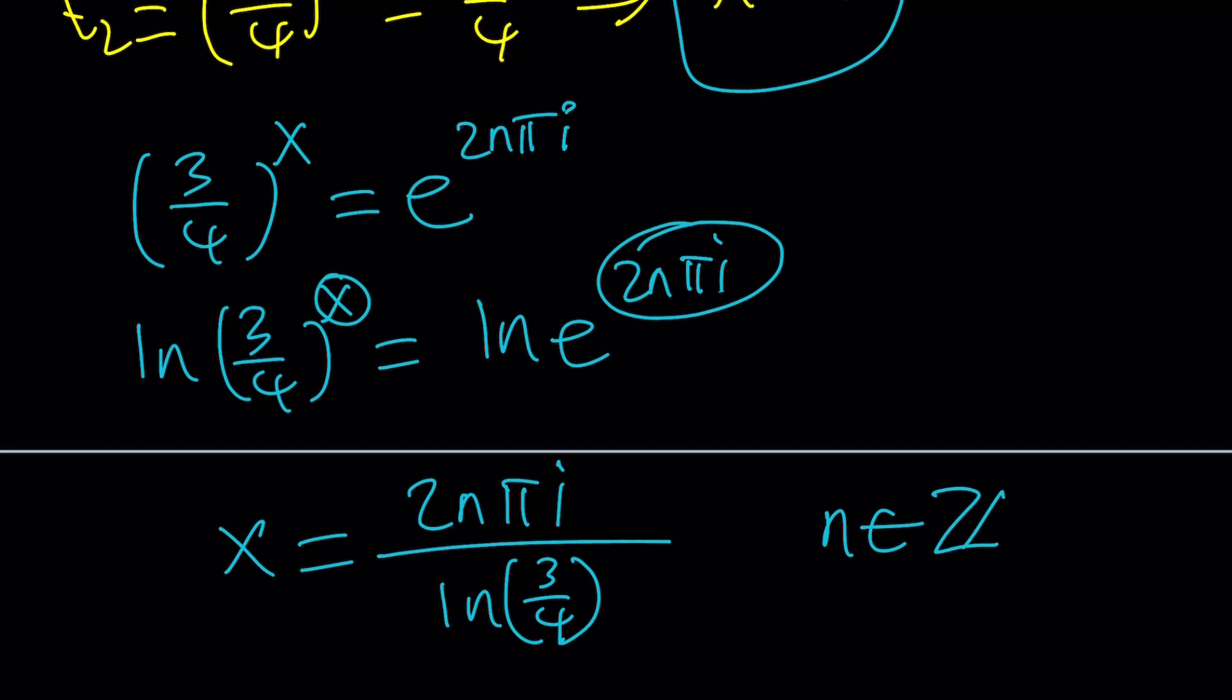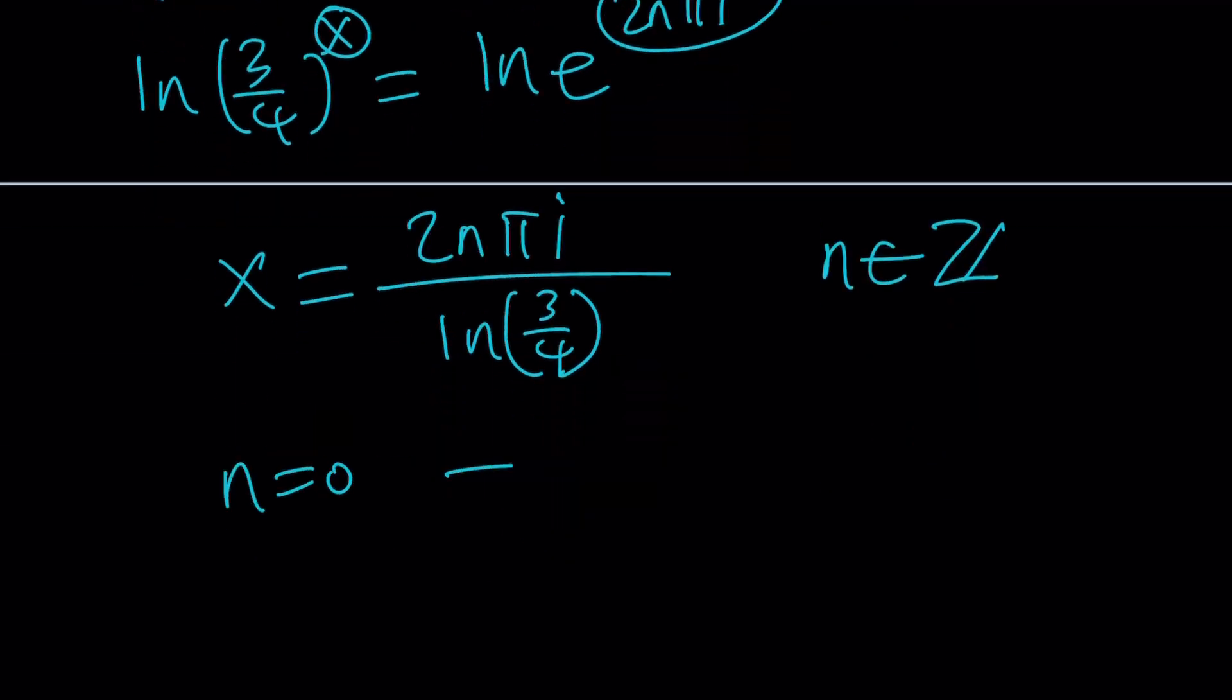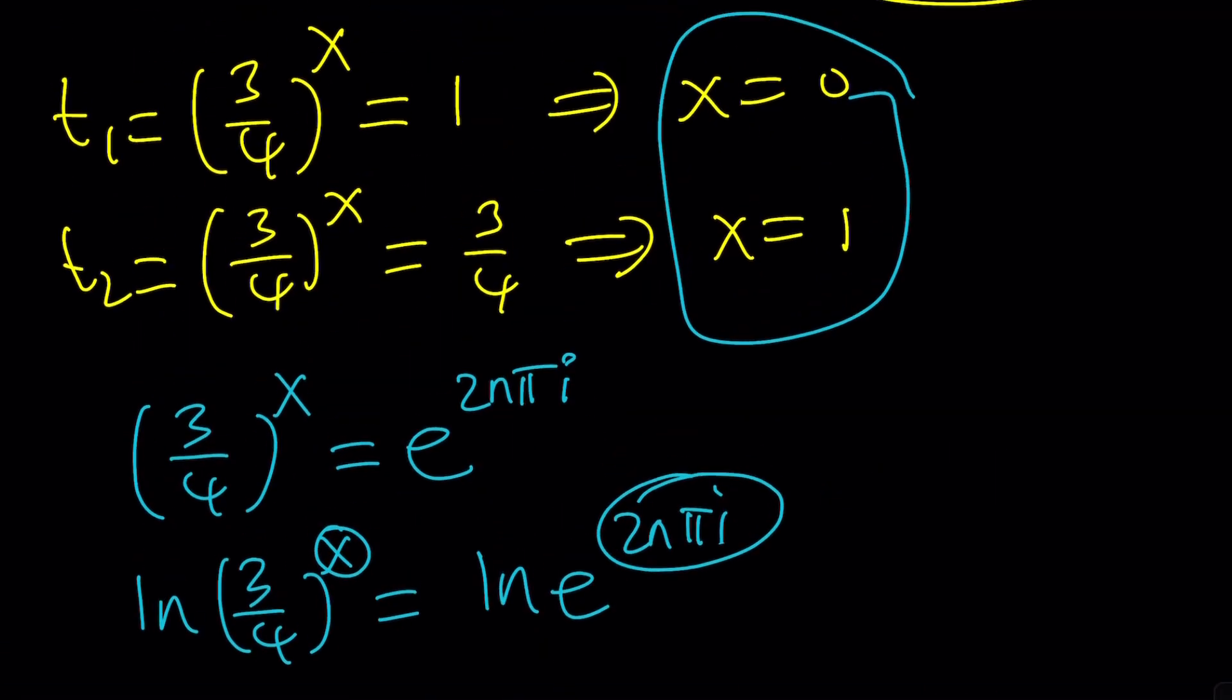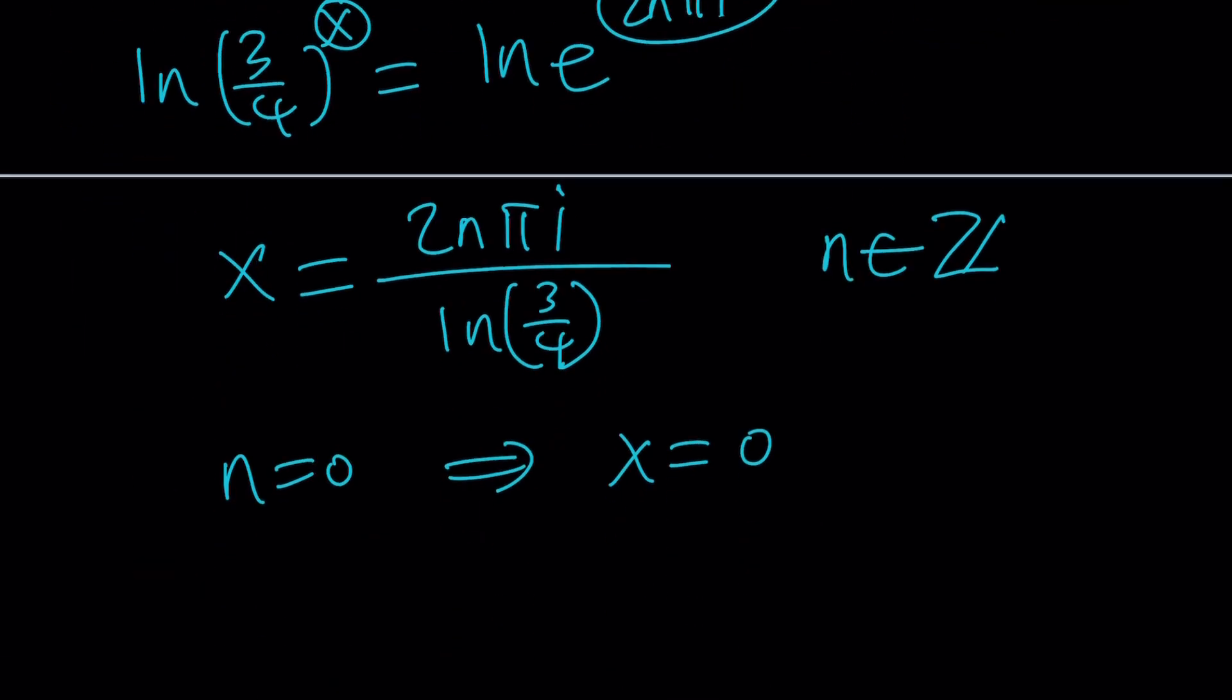you're going to get different solutions, which means there are infinitely many solutions in the complex world. It's a multi-valued result. But what happens if n is equal to 0? Of course, if n is equal to 0, then you're going to get x equals 0. As before, right? Of course, that's a complex solution as well.